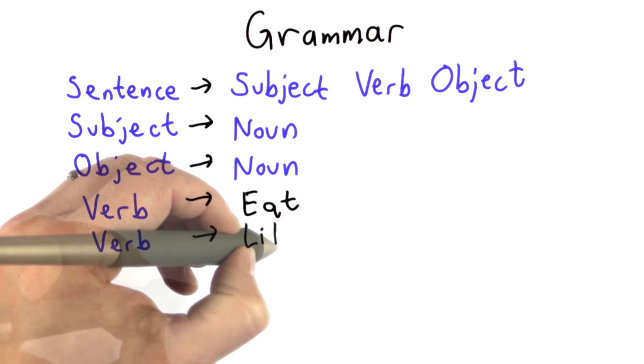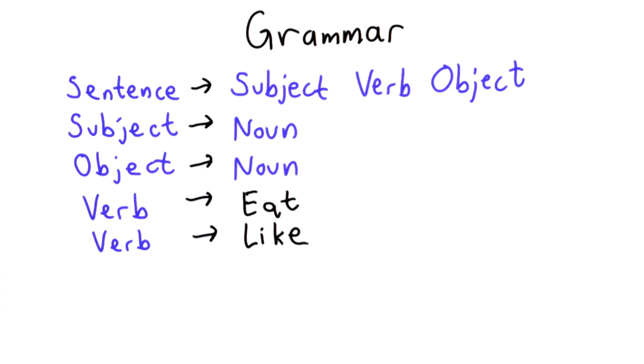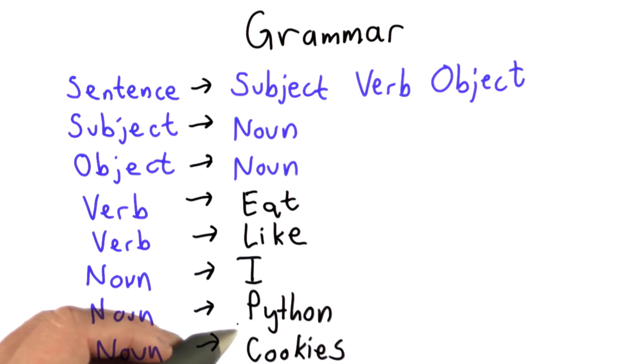A verb could also be the word like. And there are lots of other words that the verb could be. A noun could be the word I. A noun could be the word Python. A noun could be the word cookies.